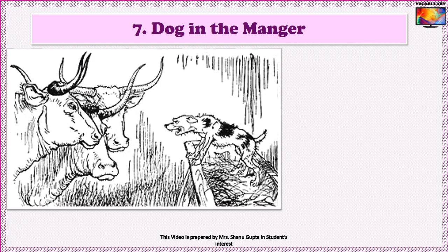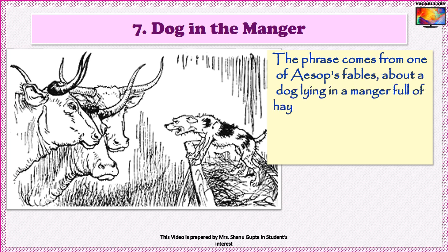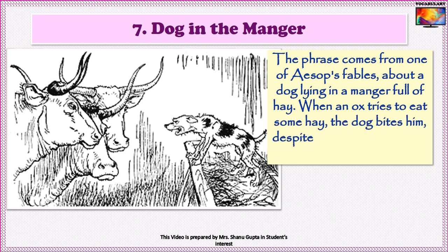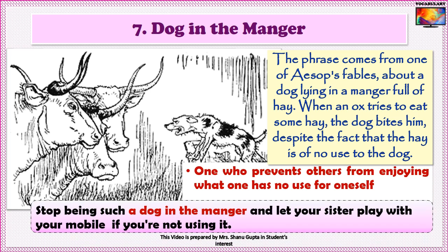Idiom number 7 is Dog in the manger. The phrase comes from one of Aesop's fables about a dog lying in a manger full of hay. When an ox tries to eat some hay, the dog bites him despite the fact that the hay is of no use to the dog. The phrase is used for someone who prevents others from enjoying what one has no use for oneself. An example: Stop being such a dog in the manger and let your sister play with your mobile if you are not using it.